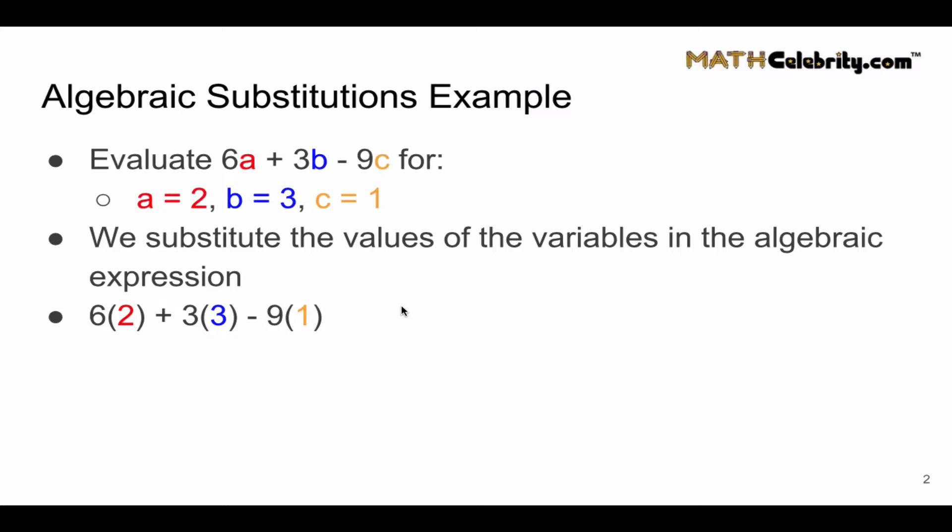Now let's evaluate and simplify. 6 times 2 is 12, 3 times 3 is 9, and 9 times 1 is 9. Simplifying this, we get 12. Now when we evaluate 6a plus 3b minus 9c for these variable values, the answer is 12.